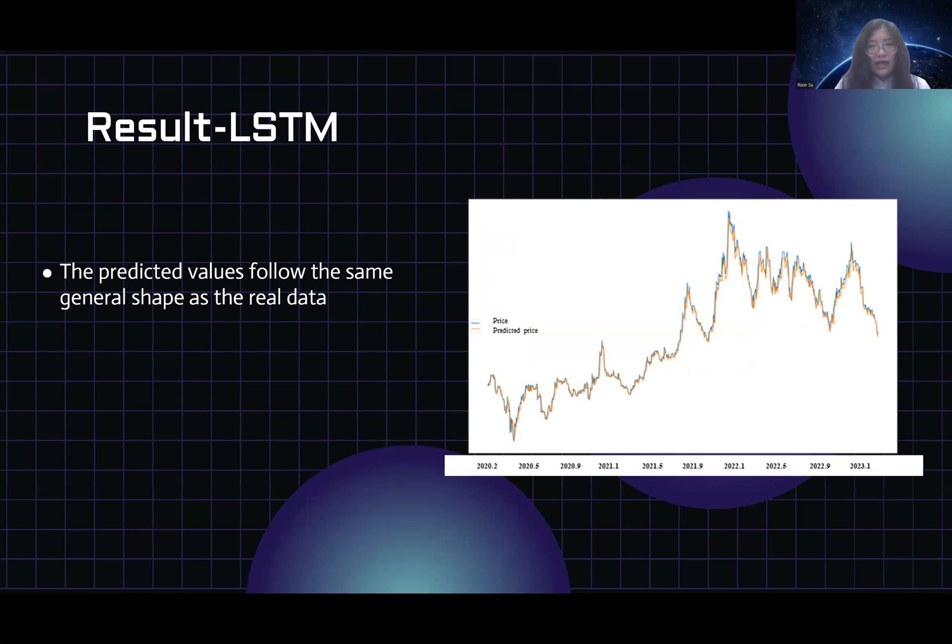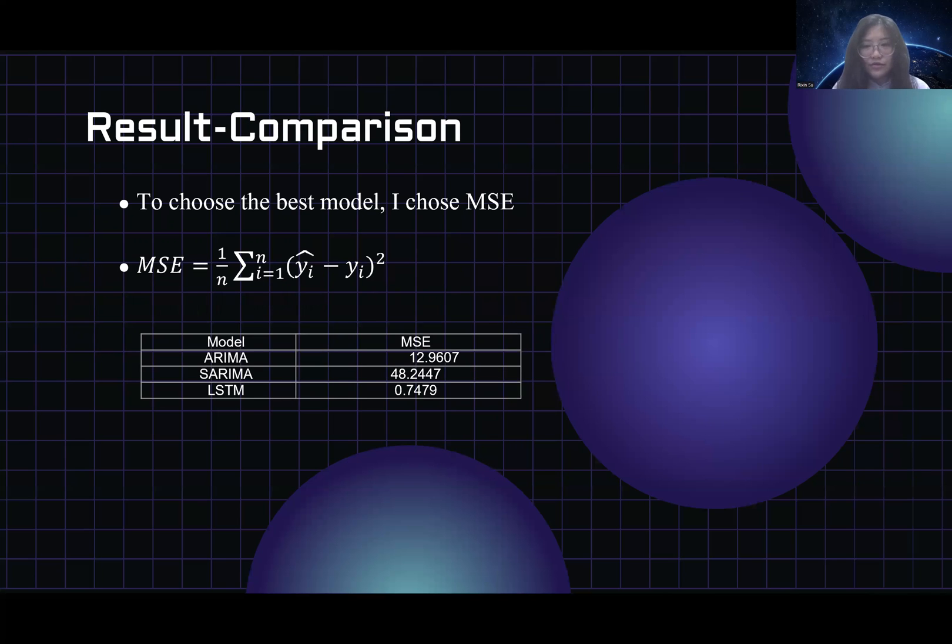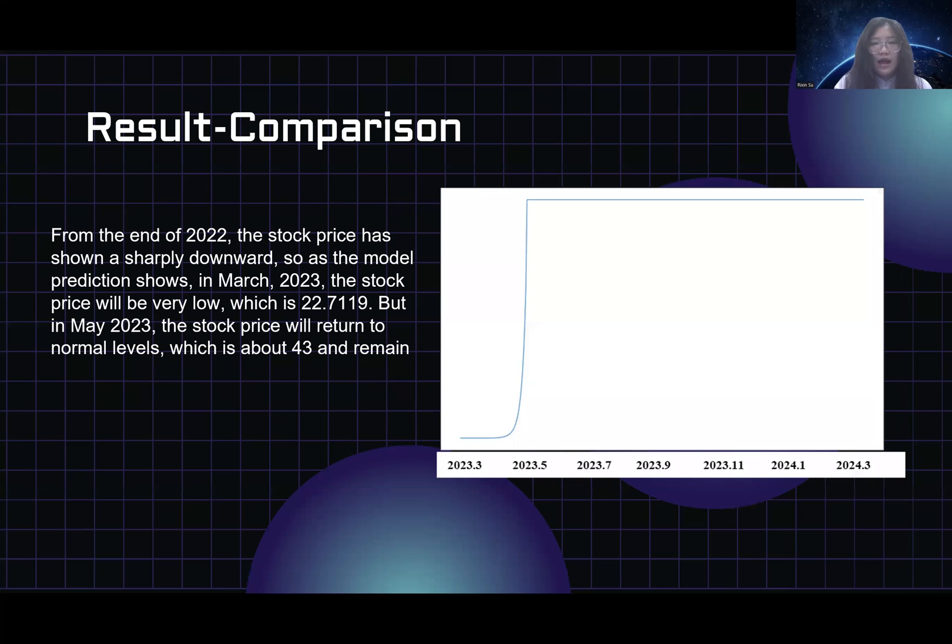So let's move on to the LSTM model. The right figure shows the LSTM model fits well to the real price. But to make our final decision, I chose MSE to do the comparison. MSE is mean squared error, and the smaller MSE shows the better the model performance. And this equation is shown on the slide. The table shows the LSTM model has the smallest MSE compared with the ARIMA model and the SARIMA model, so we choose this to do the final prediction.